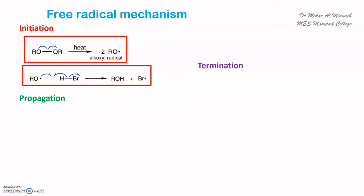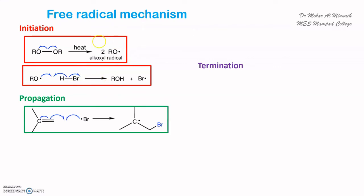During the propagation step, the bromine free radical abstracts an electron from the double bond of the alkene. The pi bond cleaves homolytically, an electron is abstracted by the bromine free radical, and a bond is formed between bromine and a carbon of the alkene. A C–Br bond is formed and a free radical is generated on the carbon of the alkene.